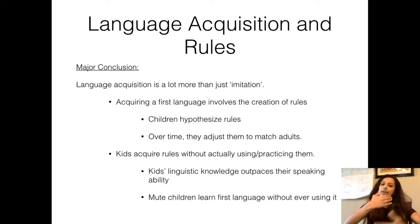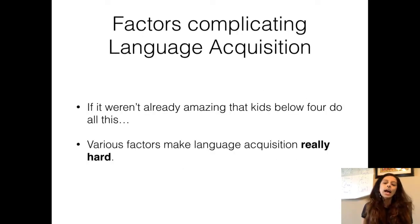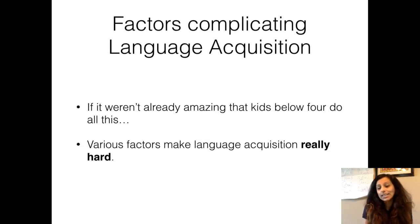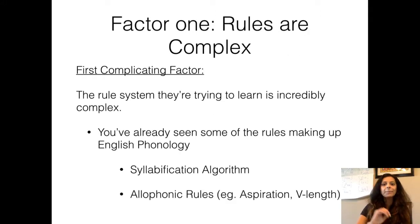What happens when you are acquiring your first language is that you are hypothesizing certain kinds of rules that exist in the language. Then, as they get input and hear certain patterns and generalize from them, they start to learn things and stop making mistakes. And if you aren't already fascinated by how children actually do this, you can see that there are many factors that complicate language acquisition.